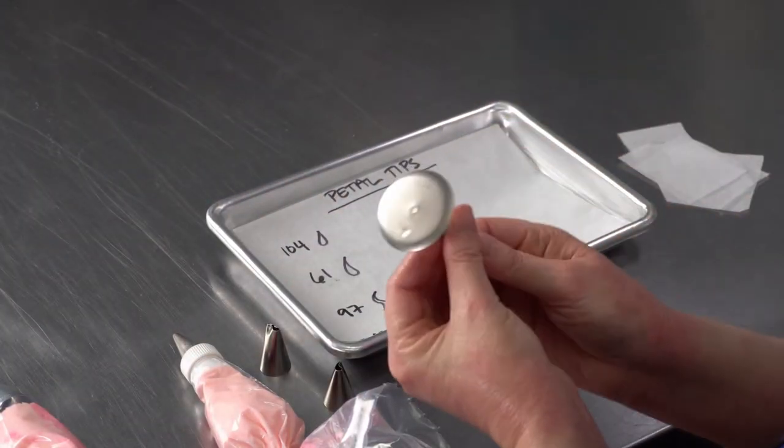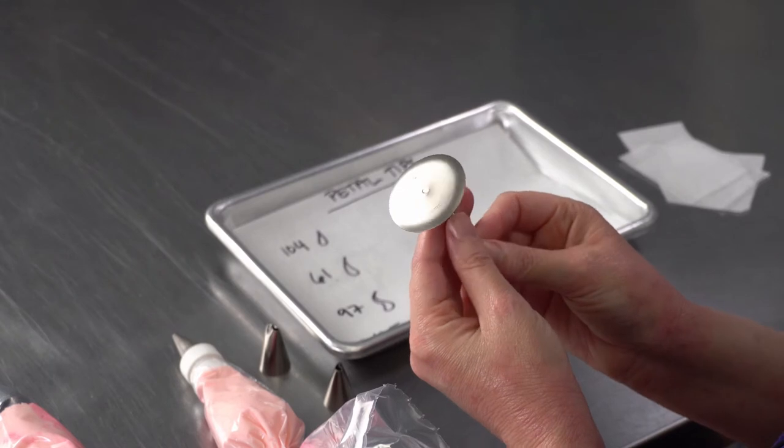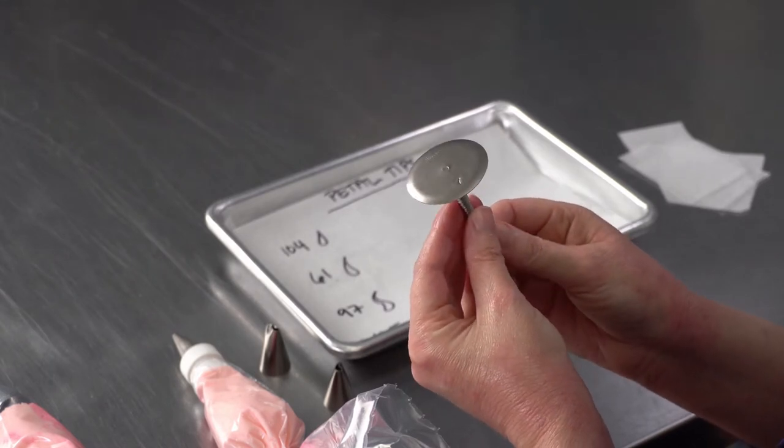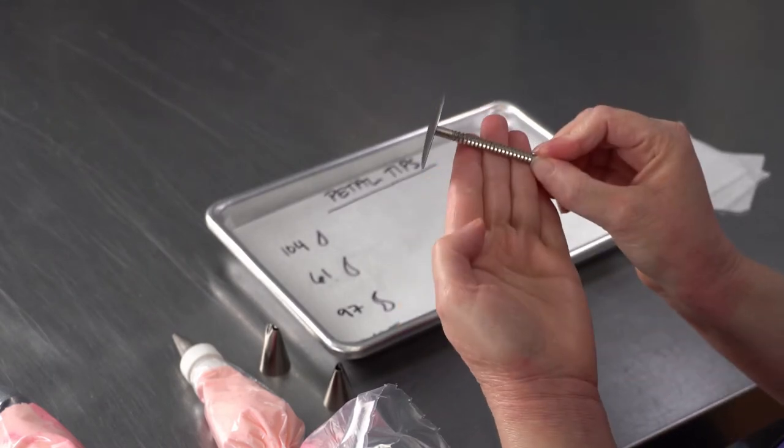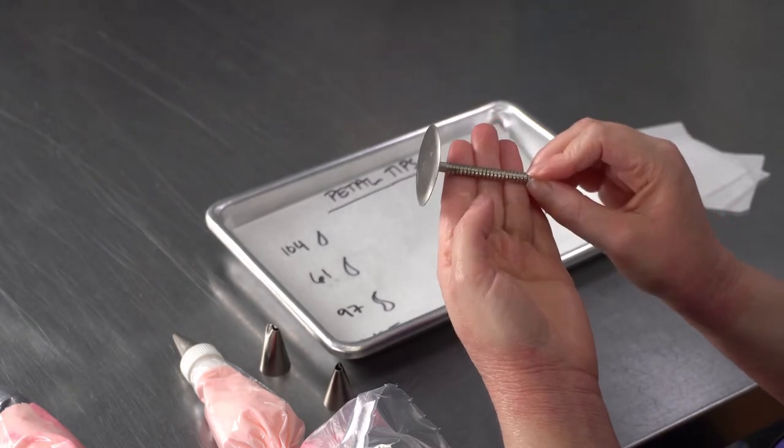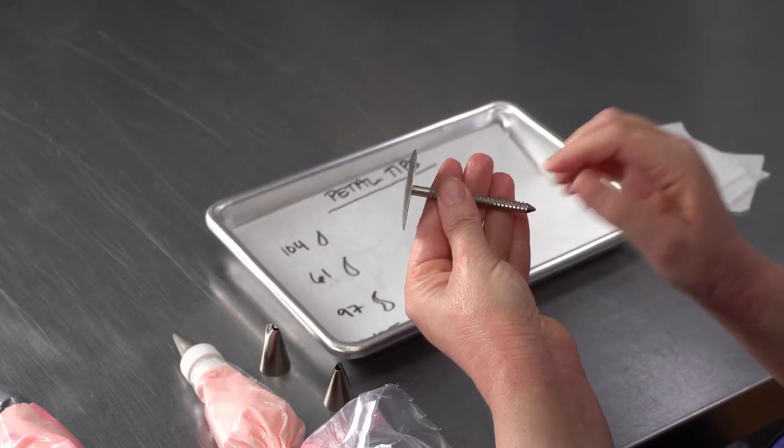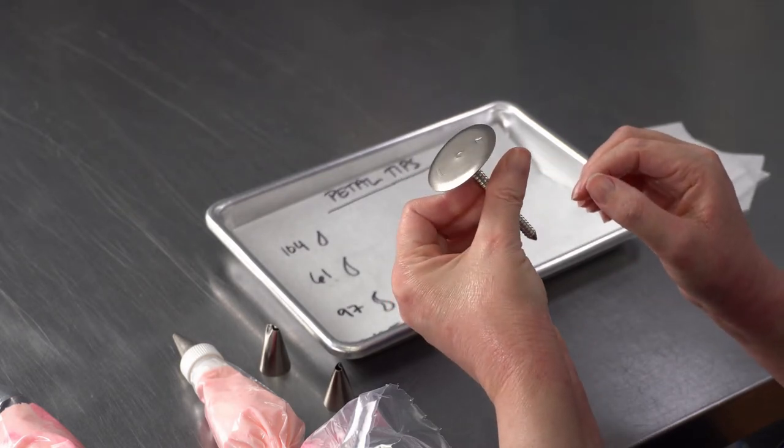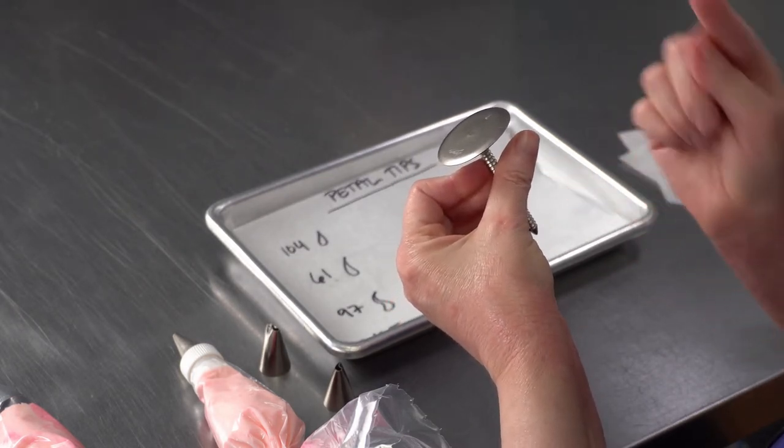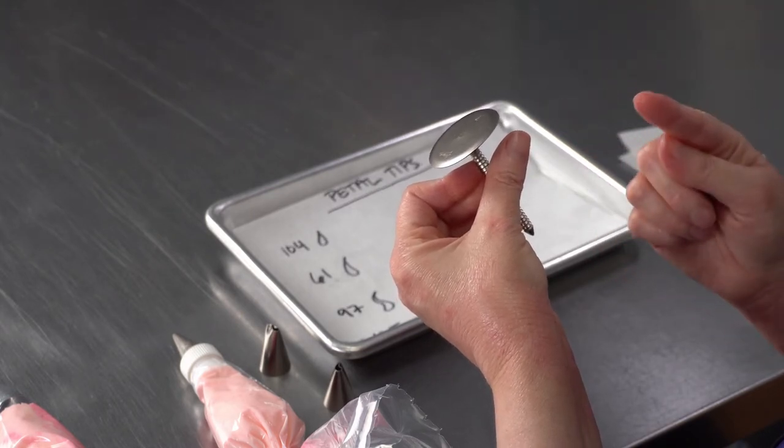So a lot of times when we're using petal tips, we're also using the flower nail. So if you haven't used one before, typically when you hold it, you want to hold it against your fingers and use your thumb to push it to the tips. And that's going to create a spinning action for when you're piping.